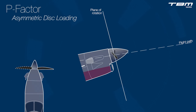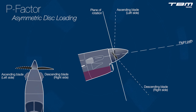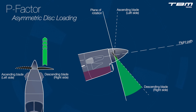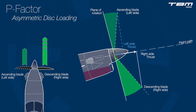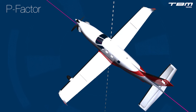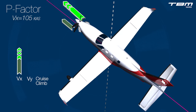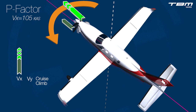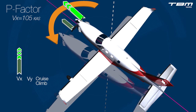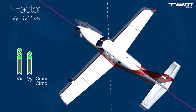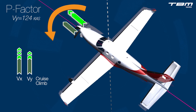P-factor, also known as asymmetric disc loading, is a left-turning tendency resulting from the descending propeller blade's higher angle of attack, which creates more thrust than the opposite ascending propeller blades when the TBM is at high pitch attitudes. The left-turning tendency is strongest at lower speeds, such as during takeoff roll after the pitch-up rotation and during steep initial climbs at lower speeds such as VX and VY.